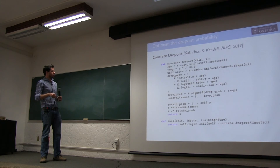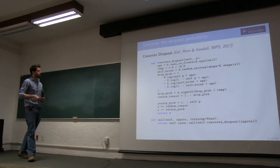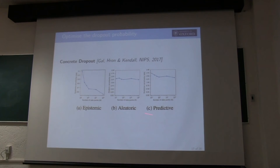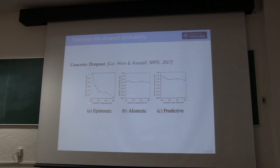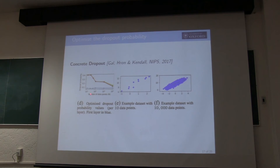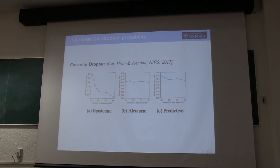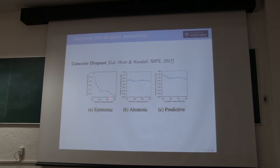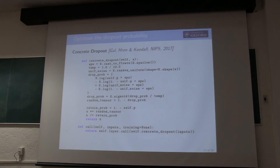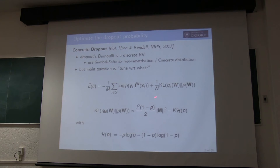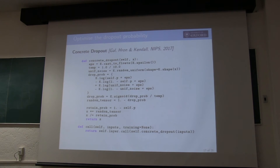This entire concrete dropout implementation takes about 15 lines of Keras code. We also look at how epistemic uncertainty changes versus aleatoric uncertainty as we get more data: epistemic uncertainty goes down to zero as we get more data (because p tends to zero, giving a deterministic model), while aleatoric uncertainty stays constant — you get more data but observational noise doesn't decrease.